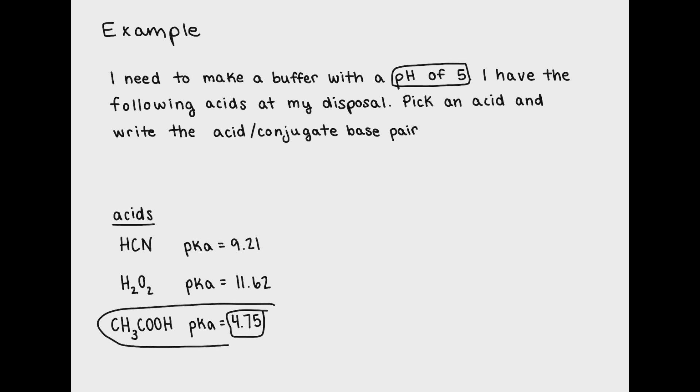Remember that you want to pick an acid that has a pKa very close, within one pH range, of your desired pH. For this reason, I picked acetic acid which has a pKa of 4.75. The conjugate base of acetic acid is the acetate ion.